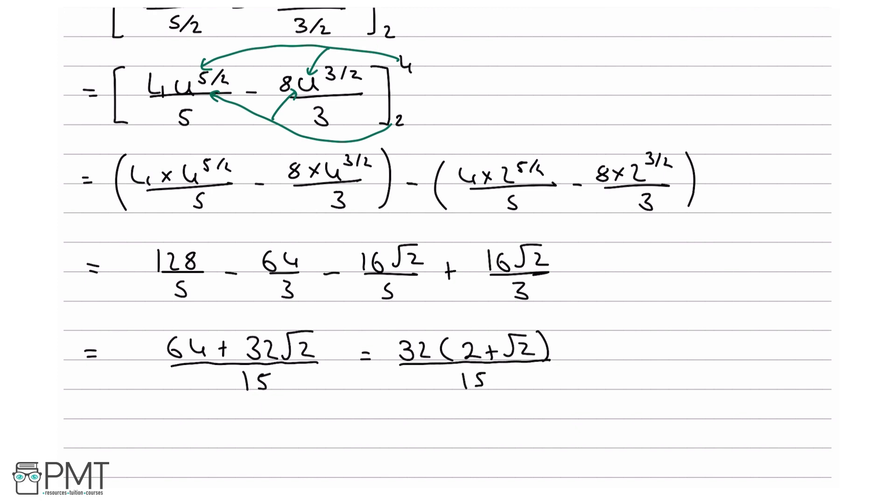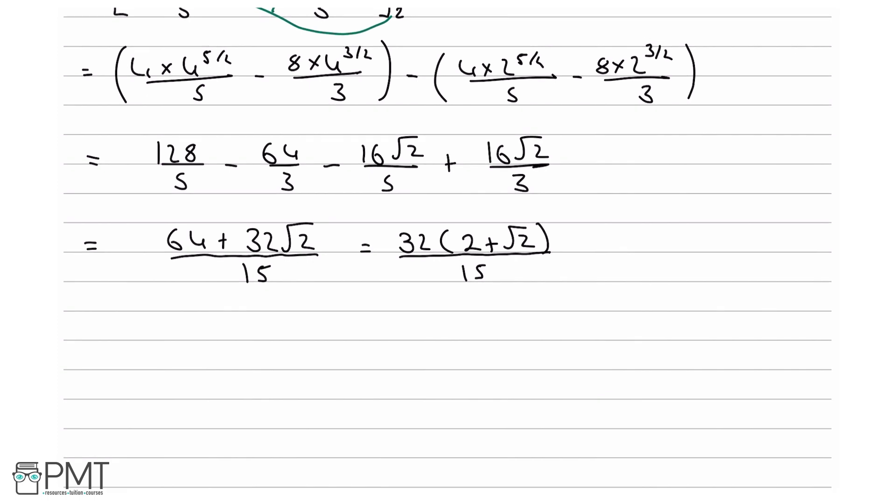And then using the rule that if you have a times b over c, this equals a over c times b, we can say this in turn equals 32 over 15 times (2 plus root 2), and then we can write as required.